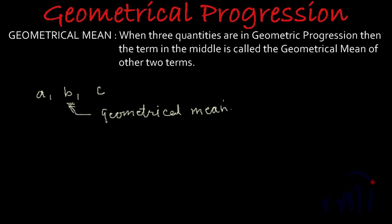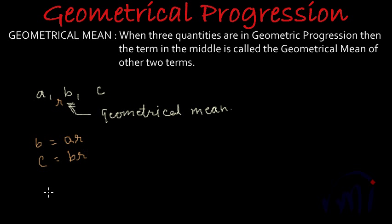If these three are in geometrical progression, then what is the necessary condition? There will be a common factor R between them. B will be equal to R times A, and C will be equal to R times B. This is the definition of geometrical progression: if terms increase or decrease by a common factor R, then the pattern is called a geometrical progression.